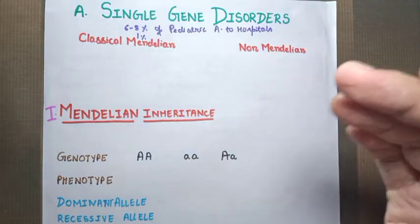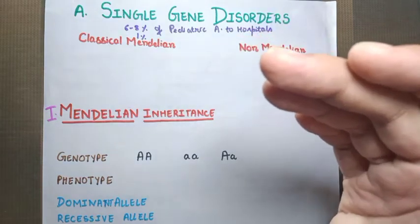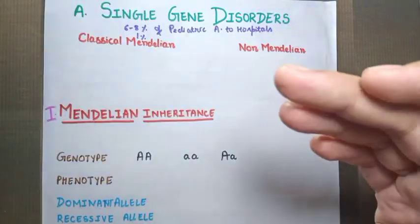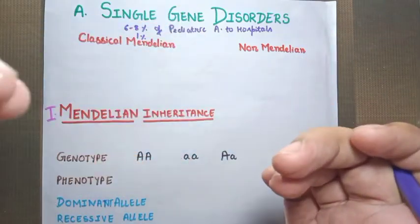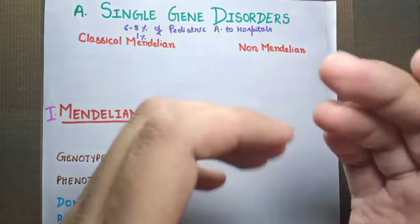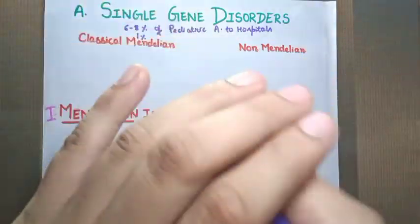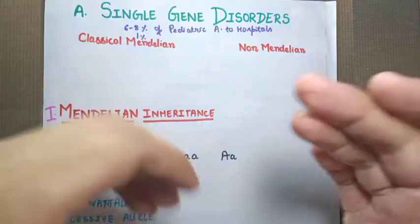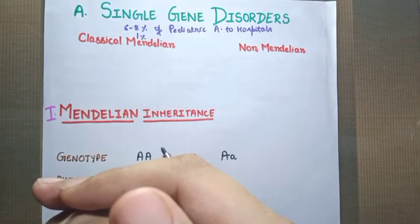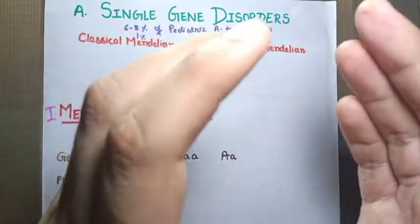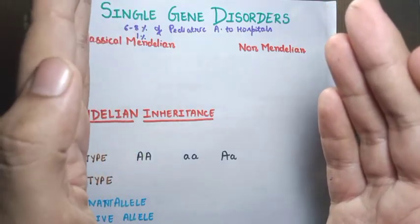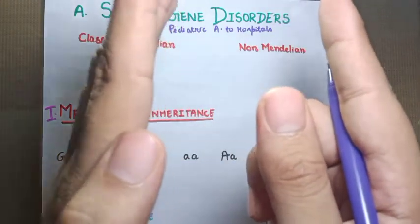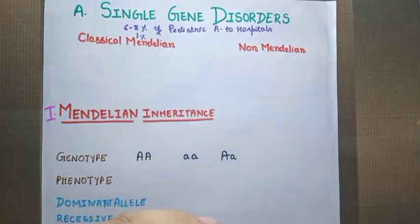We divide the single gene disorder into two categories: classical Mendelian inheritance and non-Mendelian inheritance. According to Mendel, for each character there are two alleles present in a body. An allele is a different form of a gene which occupies the same position on a chromosome. As you all know, we have 23 pairs of chromosomes — 22 pairs of autosomes or somatic chromosomes and one pair of sex chromosomes. We receive one chromosome from father and one from mother, so the gene for a particular trait is present on both chromosomes inherited.